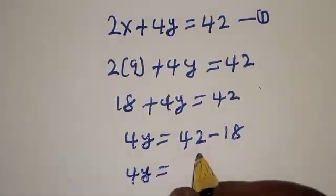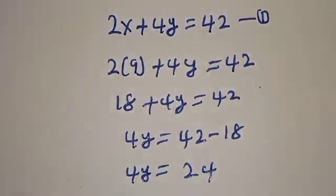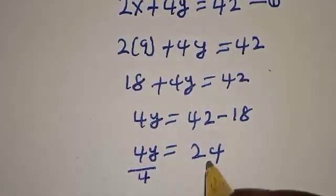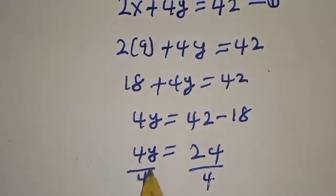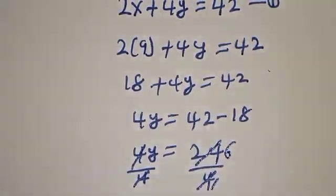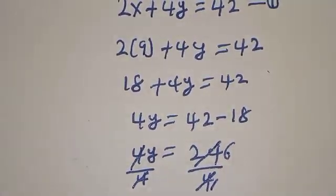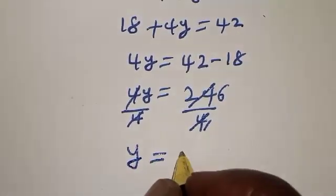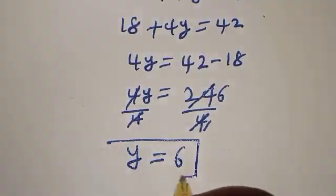4y equals 24. Now, let's divide both sides by 4. This will cancel this. y equals 6. That is the value of y.